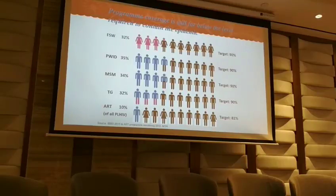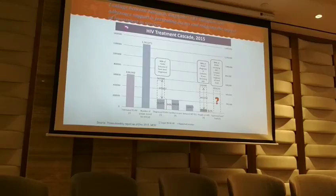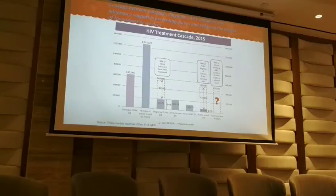We also entered coverage data, and we can see that most coverage is still below 40% — still very low. Looking at the treatment cascade, there is still leakage between outreach, diagnosis, and ART coverage. So until now, people reached through outreach are not consistently brought to HIV services to be tested and to receive treatment.